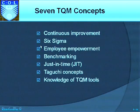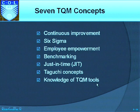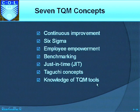The 14 Deming principles can be compressed into what we call seven TQM concepts for implementation. These seven TQM concepts are: continuous improvement, Six Sigma, employee empowerment, benchmarking, just-in-time, Taguchi concept, and knowledge of TQM tools. These are the seven fundamental concepts in total quality management.